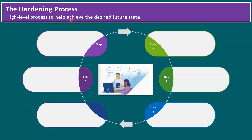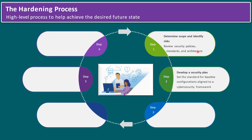Within the hardening process there is a high-level process to help achieve the desired future state. It includes six steps. Step one: determine scope and identify risk. Review the security policies, standards, and architecture. During the day-zero architecture design itself we should maintain security standards — these may include CIS benchmarks, NIST, PCI, GDPR, and so on, depending on the organization's security regulations.